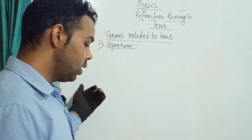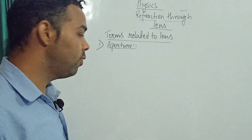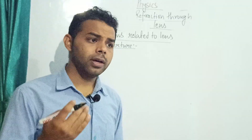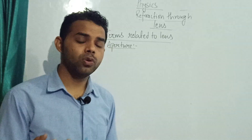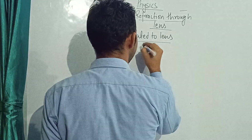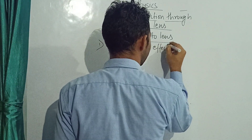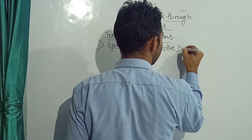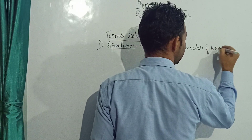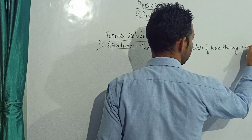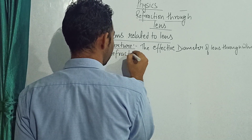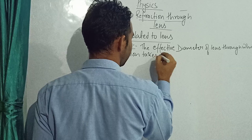So here in lenses, the effective diameter of the lens — the surface through which refraction takes place — that is known as the aperture of the lens.